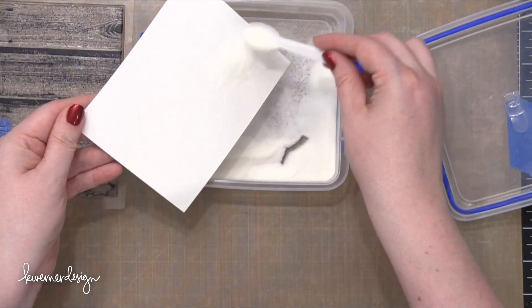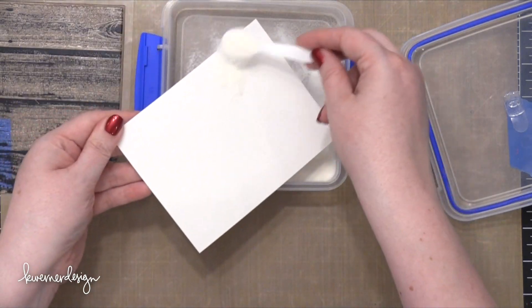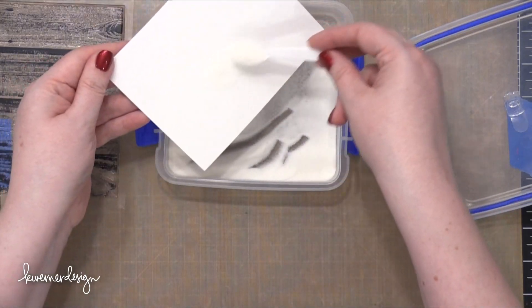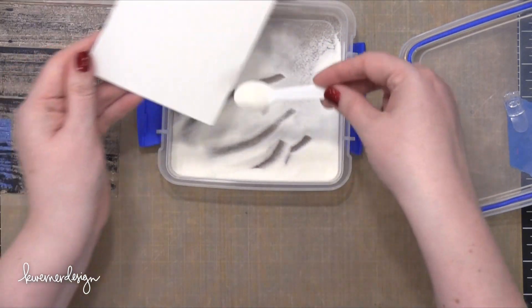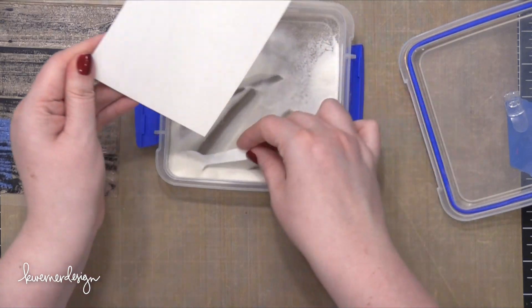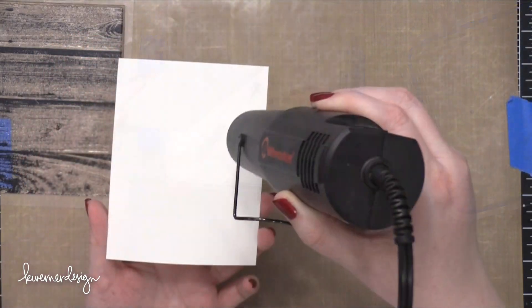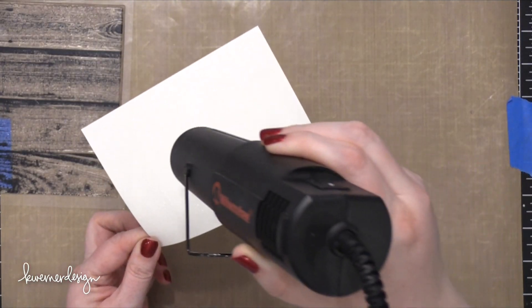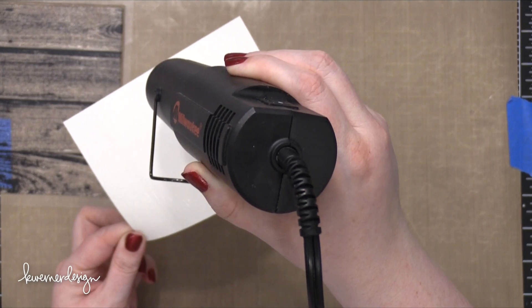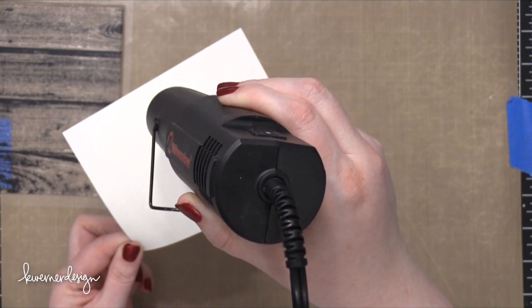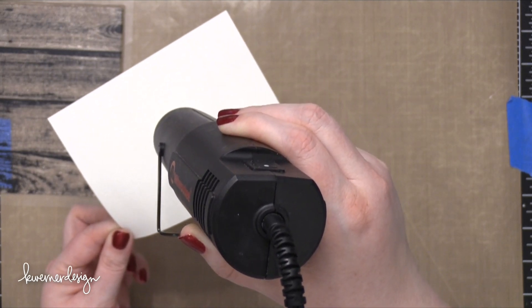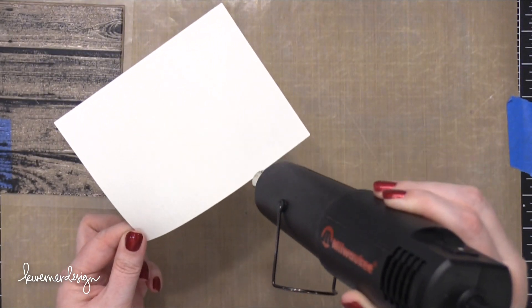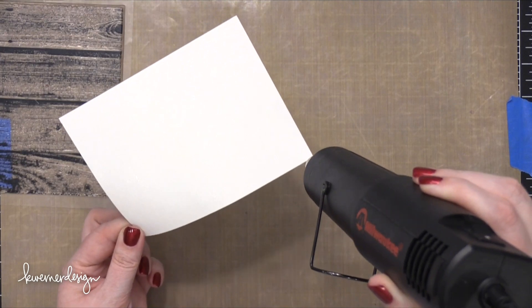I'm going to use some Ranger Clear Embossing Powder and I'm sprinkling that on over the entire background here and then I will tap the card stock on the back to shake off all of the excess. So after that was on there I used my heat tool and very slowly and efficiently it melted the heat embossing powder until it was smooth and melted. I actually had it tipped in the light so that I could see when it turned shiny and then I knew that all of that powder was melted.